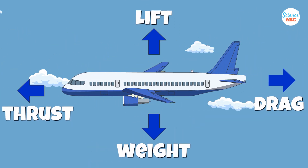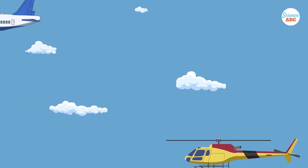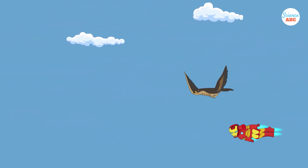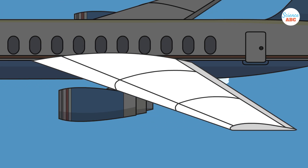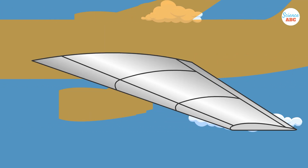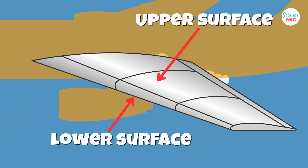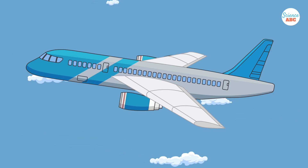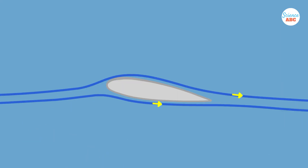To counteract this downward force, a force known as lift is required. Lift is primarily responsible for keeping an airplane, or any other object, in flight. The airplane's wings are primarily responsible. Most aircraft wings have a characteristic design — a flatter lower surface and a curved upper surface — making a cross-sectional shape known as the airfoil.